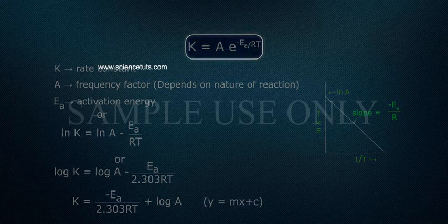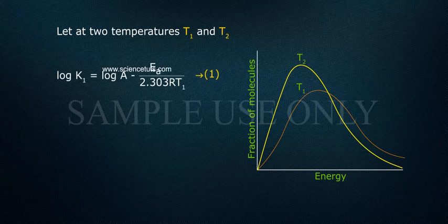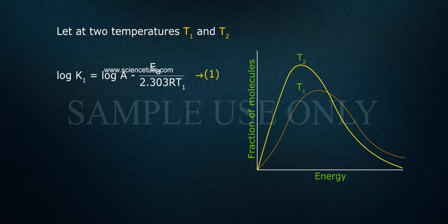Let at two temperatures T1 and T2, log K1 equals log A minus Ea by 2.303 RT1. This is equation 1.